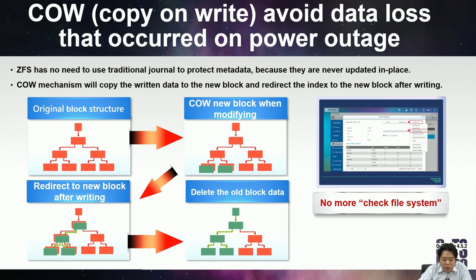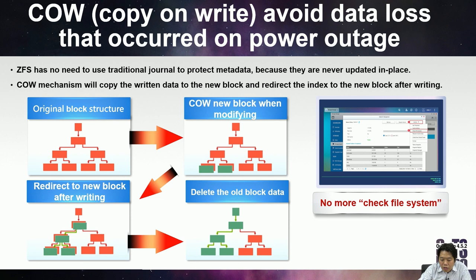Besides self-healing, ZFS has the important copy-on-write mechanism, which prevents data loss during power outages. In the past, after an unexpected shutdown, you had to run a file system check for many hours. With QTS Hero's copy-on-write, this is no longer needed — instead of using a traditional journal to protect metadata, any data change is copied to a new block and the index is redirected to the new block after writing. The old block is only deleted after the write completes, so if any power outage occurs mid-write, the old data remains complete and correct.